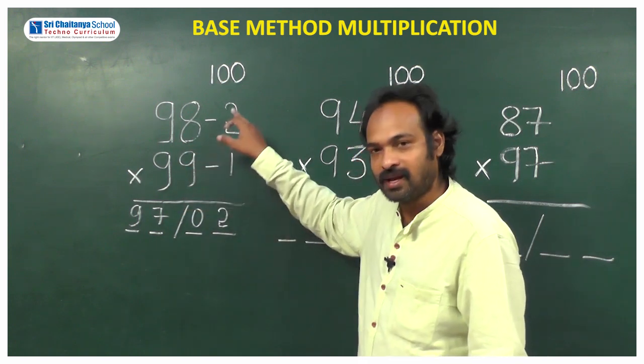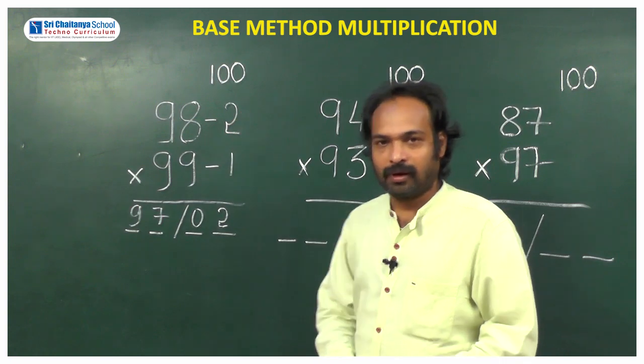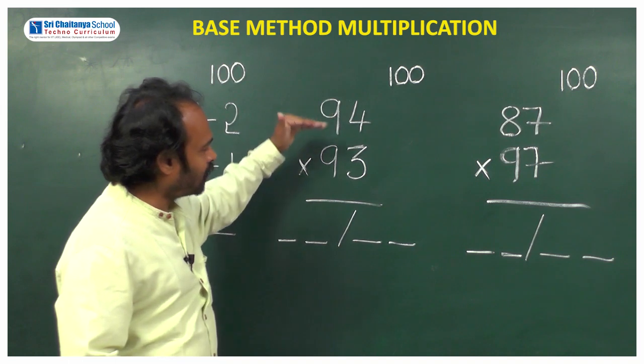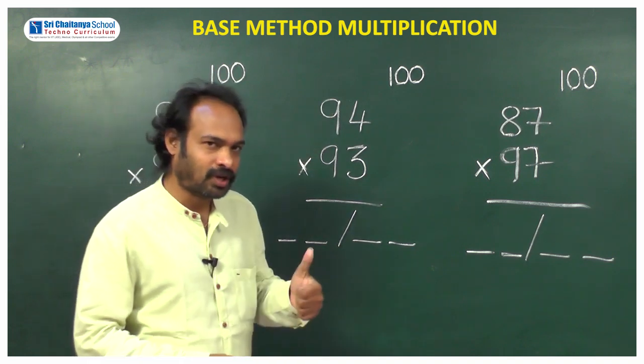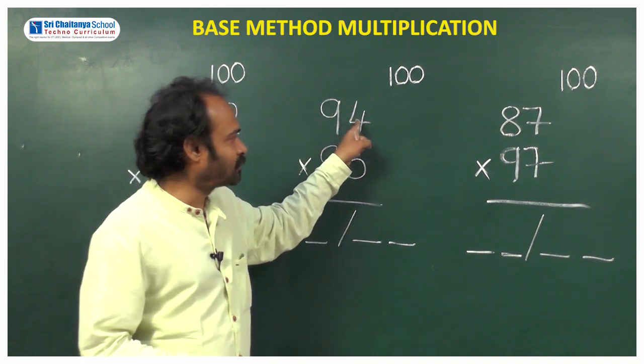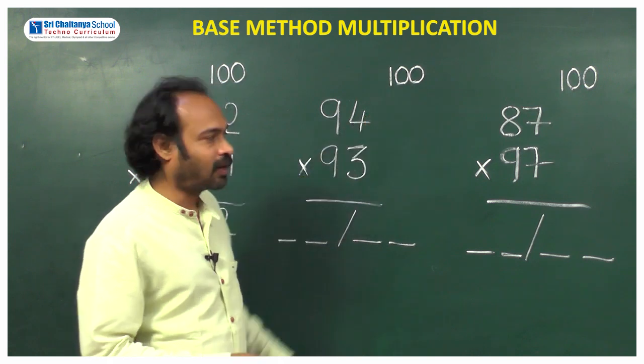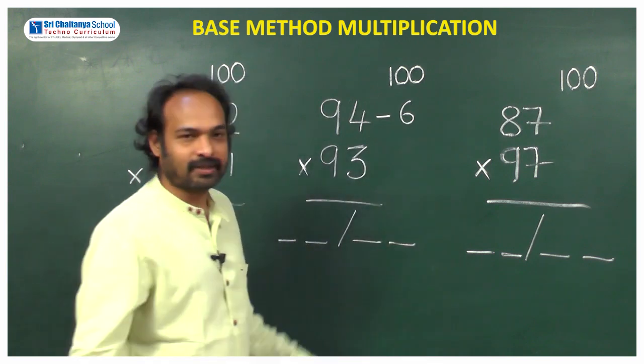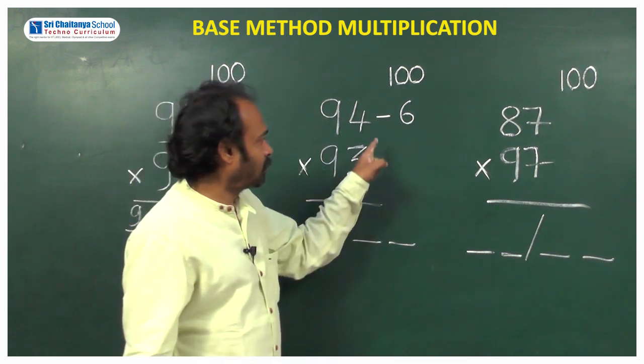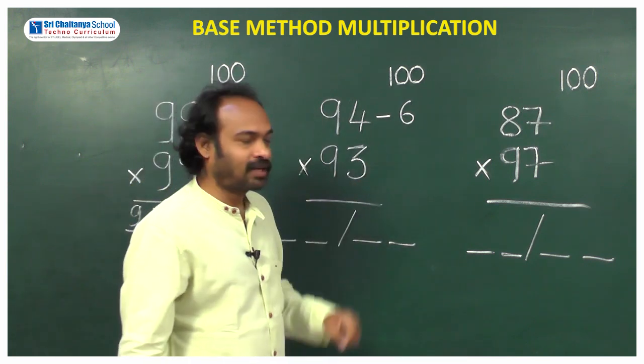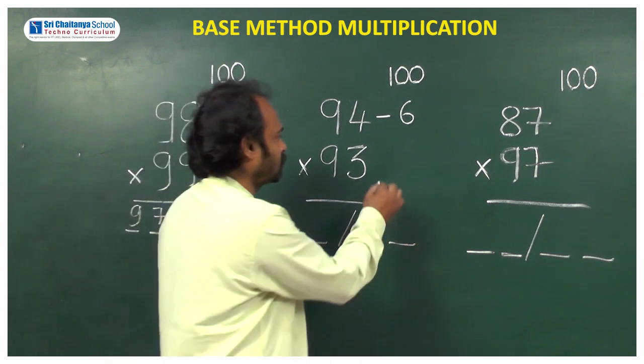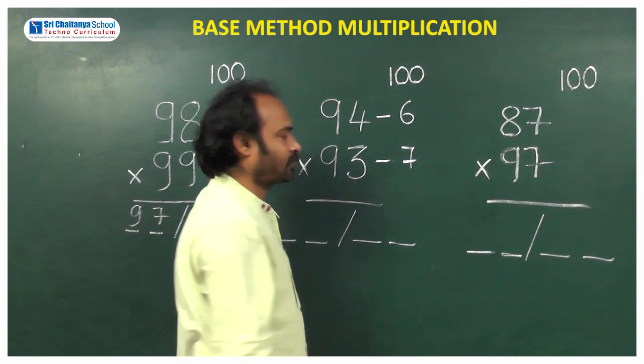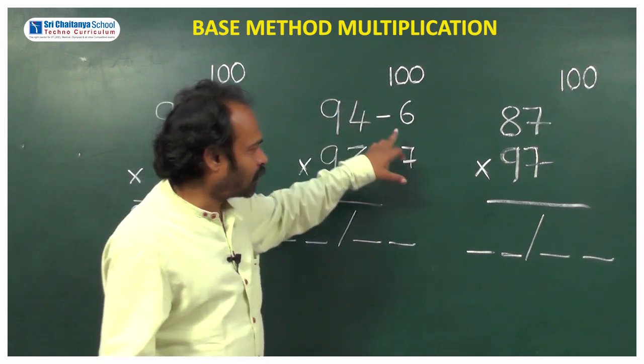Let us do one more example. Here 94 into 93. What is the first step? Find the difference between 94 and 100. What is the difference? 6. So 100 minus 6 is 94. Now how much is it less than 100? 7. So 100 minus 7 is 93.